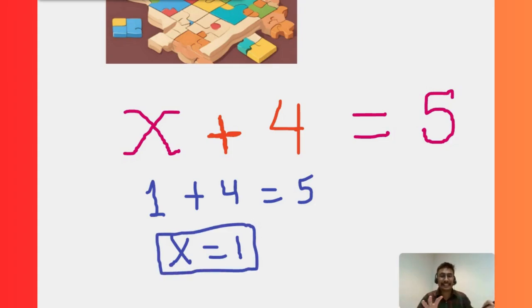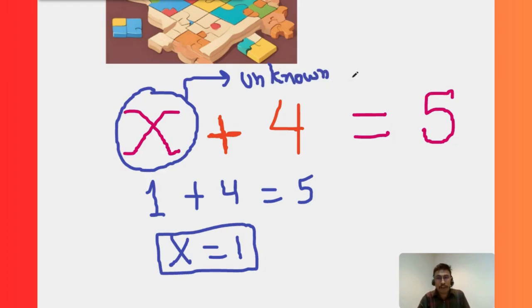And over here, the letters x, y, z, and other alphabets, these are used to show the variables, the unknown values.